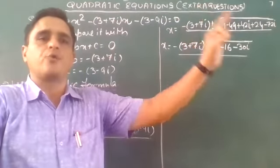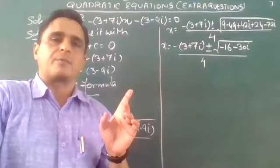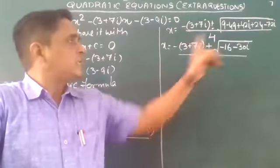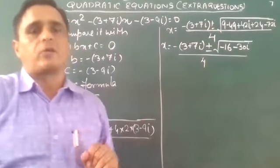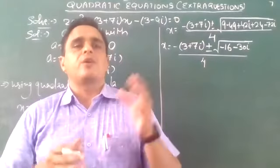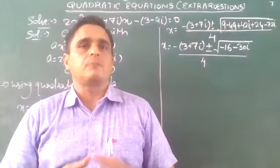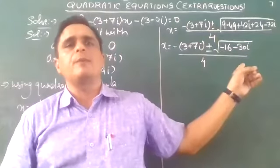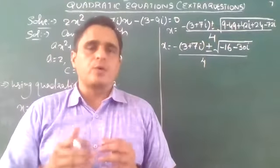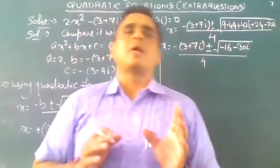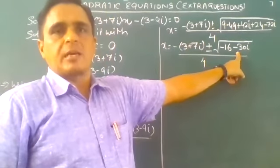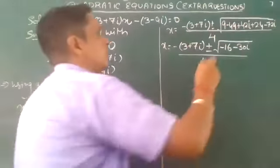We need to find the square root of a complex number, as covered in the previous lecture. We apply the formula to find the square root of the complex number under the radical sign.